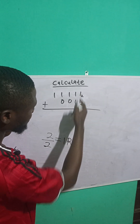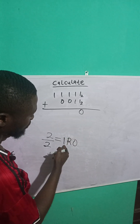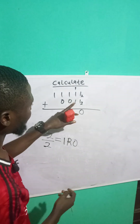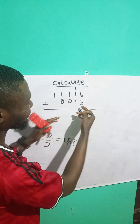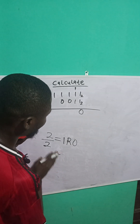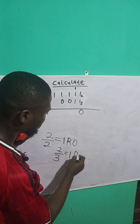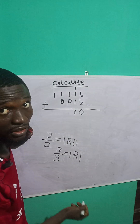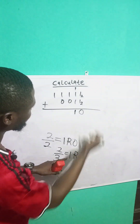So 1 plus 1 is 2, and 2 plus the carried 1 is 3. We have 3 here, but we cannot write 3 because 3 is bigger than 2. So we divide 3 by 2, which gives us 1 remainder 1. If 2 people share 3 oranges, it's 1 remainder 1. This remainder of 1 we bring down, because 1 is less than 2, and the quotient 1 we carry to the next number.